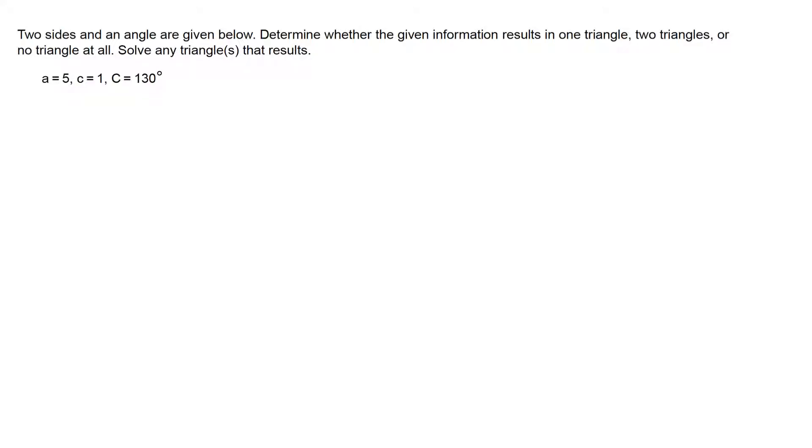Two sides and an angle are given below: lowercase a, lowercase c, and angle C. Determine whether the given information results in one triangle, two triangles, or no triangle at all. Solve any triangle that results.